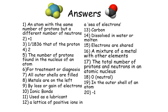Okay guys, here are your answers. Number one: an atom with the same number of protons but a different number of neutrons. Number two: plus one. Number three: 1/1836 that of a proton. Number four: two. Number five: the number of protons found in the nucleus of an atom. Number six: for treatment or diagnosis.